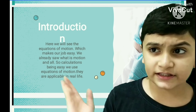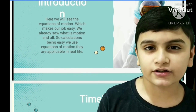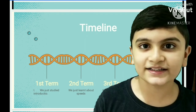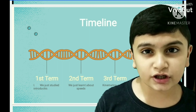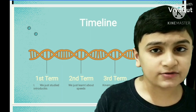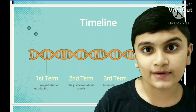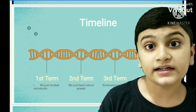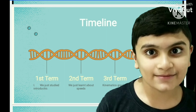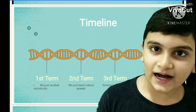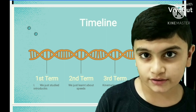In the timeline, in the first term or part, you studied about the introduction — what is motion and which terms. In the second part, you saw about speed, velocities, acceleration, displacement, distance, etc. In the third part, you saw about kinematic graphs. And now we will see about the equations of motion.